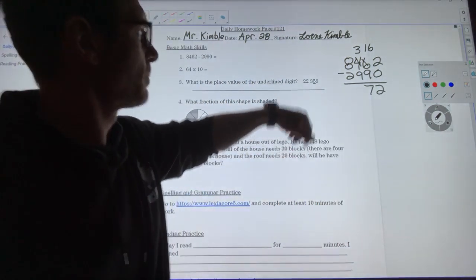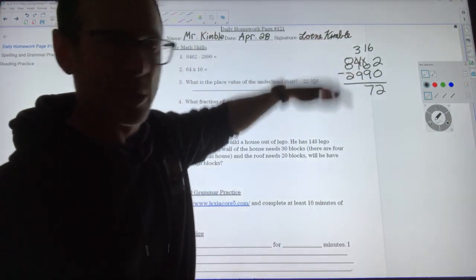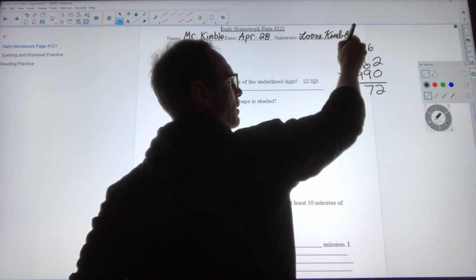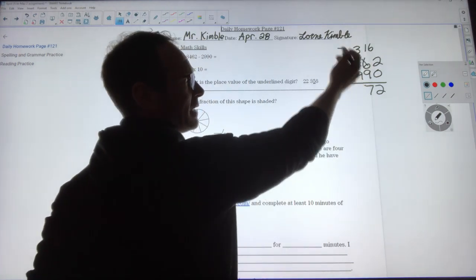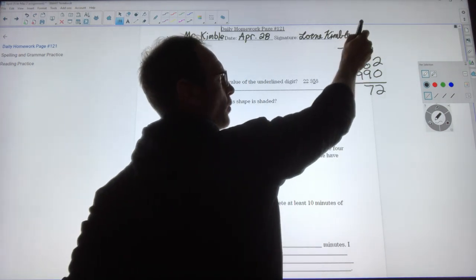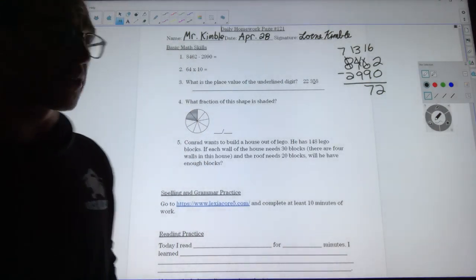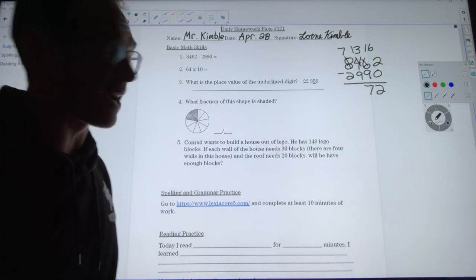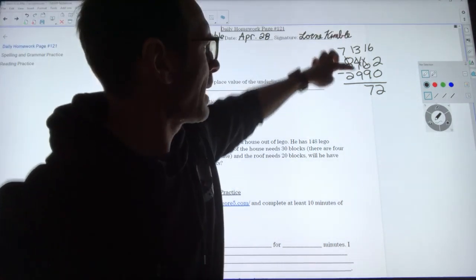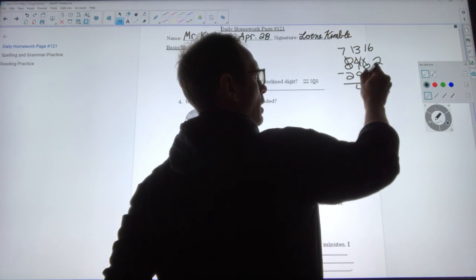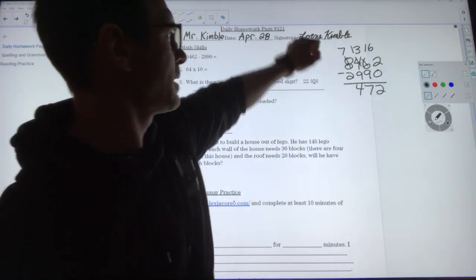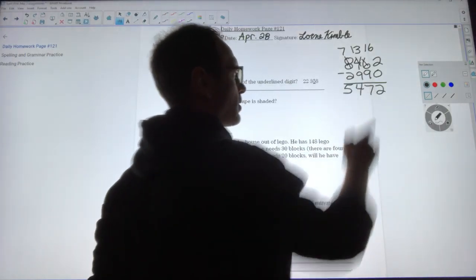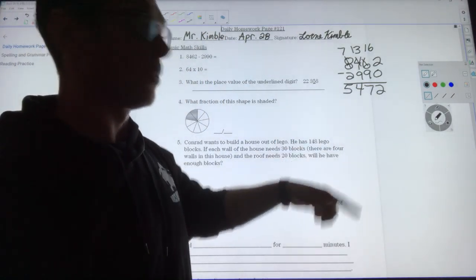Now I have 300 minus 900, once again I'm gonna have to do some borrowing so I'm gonna borrow from the thousands place. I'm gonna take a thousand from here so that's gonna become 7,000 and move that thousand over to the hundreds place. Now that's 13 hundreds, 1,300 really, so 13 minus 9 is 4, so that's 400 in that place. Now 7,000 minus 2,000 is 5,000, so 5,472. Yeah, it was between 5,000 and 6,000, that's what I thought.